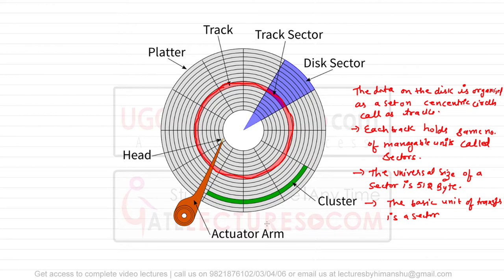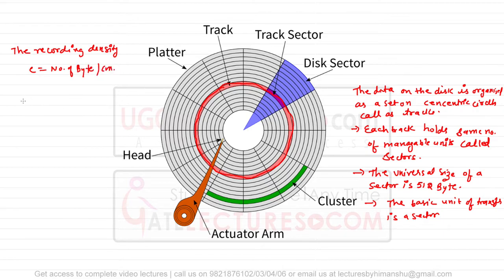There are basic terminologies which we use. Number one is the recording density, which we generally denote as 'e', which is the number of bytes per centimeter. On very high-end disks this recording density is very high, because as high as the recording density is, that will make the disk more expensive. In the outer sectors or outer tracks, because the track is very wide, the outer track must contain more bytes.